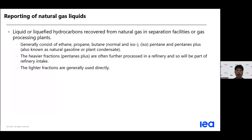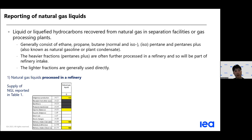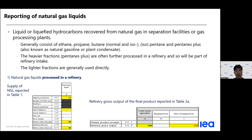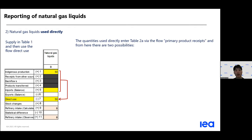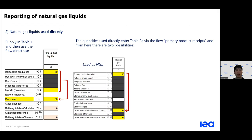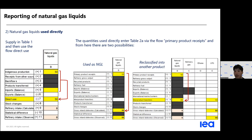The first tricky topic is the reporting of natural gas liquids (NGL). NGL can first be processed in the refinery — refinery gross output produces the final products, and the supply of NGL is reported respectively in Table 2 and Table 1. We also have another case where NGL is consumed directly; in that case, we only report the amount directly used under the direct use flow, and since it doesn't go through the refinery process, in Table 2 we report that under primary product receipts. If it is reclassified into another product, then we can use the flow called inter-product transfers.